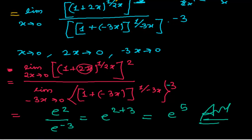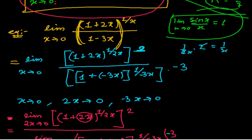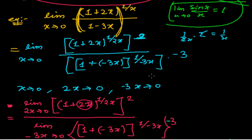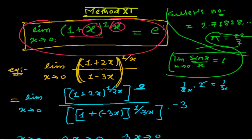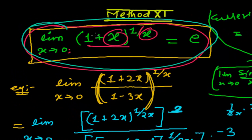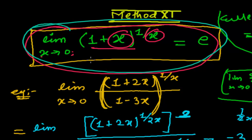Like this we have to solve this kind of problem — just like in trigonometry we convert into the sin(x)/x standard form, here we convert into the standard form: limit x tends to 0, (1 + x)^(1/x) = e. In the next video we will solve more problems related to this standard formula.